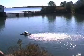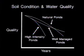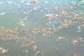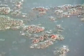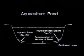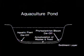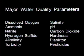Aeration and circulation are the key elements in water quality management. Soil conditions and water quality deteriorate over time at a more rapid rate in intensive aquaculture ponds. Decaying aquatic plants, algae and other phytoplankton accumulate on pond bottoms along with uneaten food and animal wastes, causing a deterioration of soil conditions.